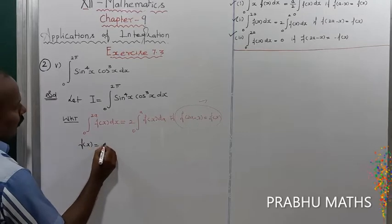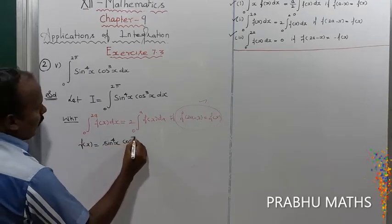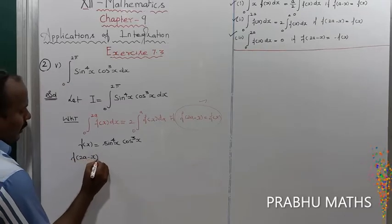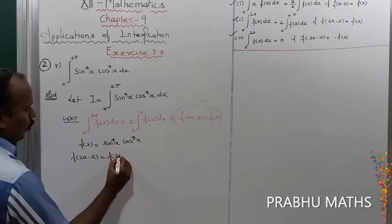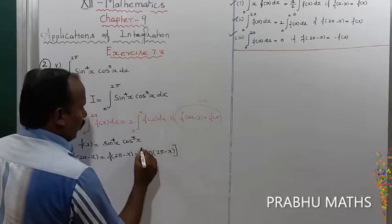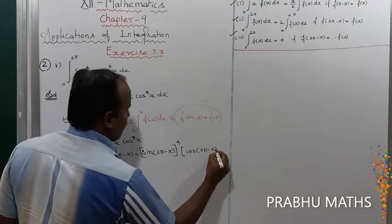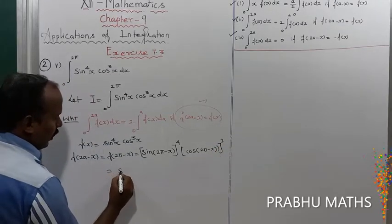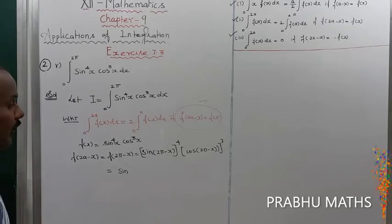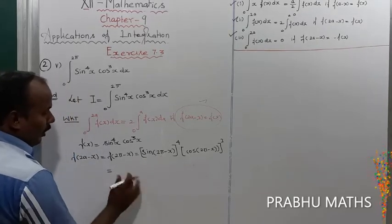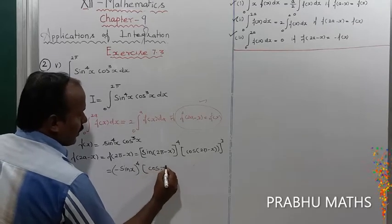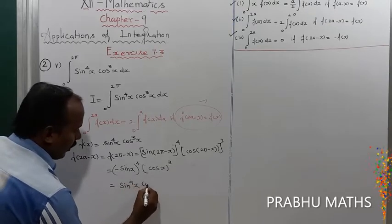Let f(x) = sin⁴(x) cos³(x). We check f(2π - x): sin(2π - x) is in the 4th quadrant, so sin(2π - x) = -sin(x), giving (-sin x)⁴ = sin⁴(x). And cos(2π - x) = cos(x), giving cos³(x). So f(2π - x) = sin⁴(x) cos³(x).